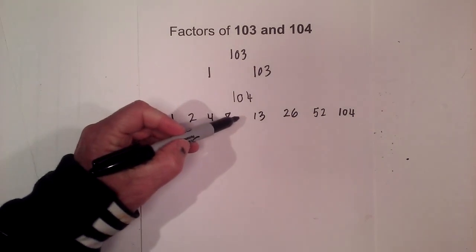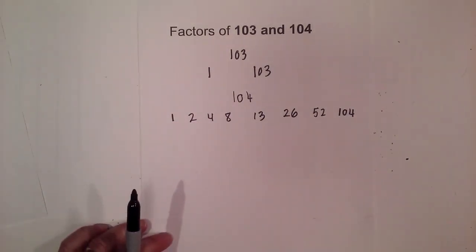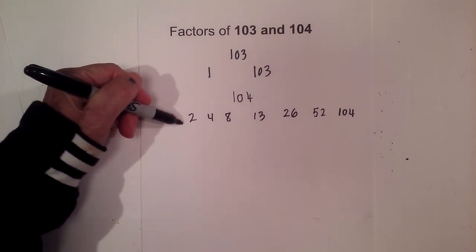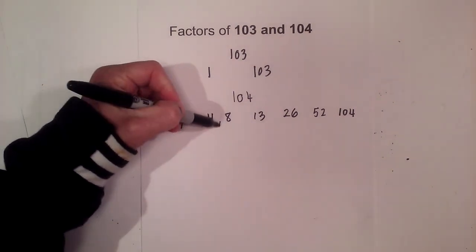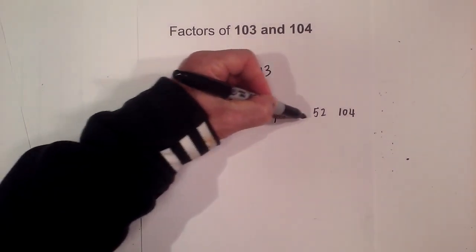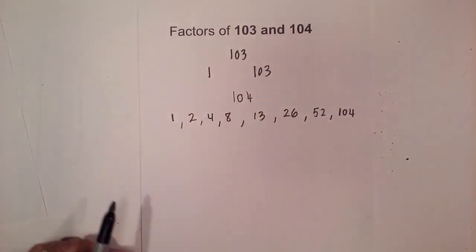9, 10, 11, or 12 do not go into 104. So the factors are 1, 2, 4, 8, 13, 26, and 52.